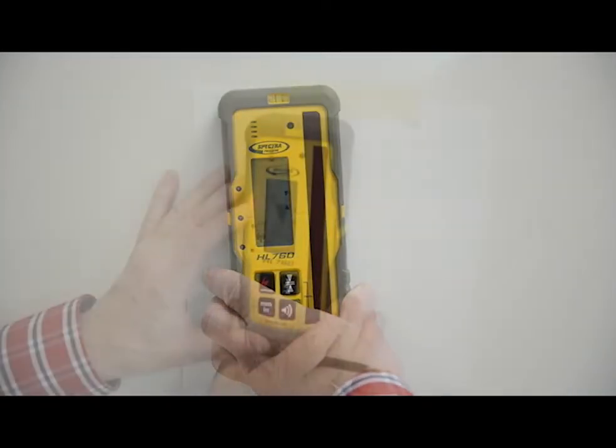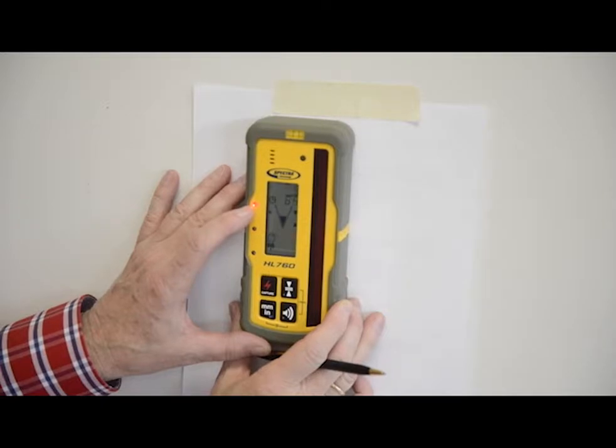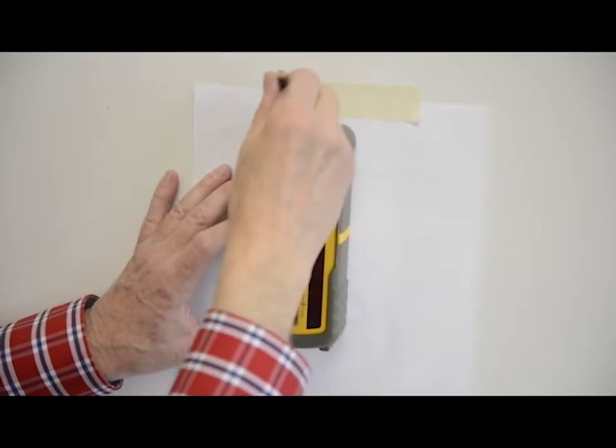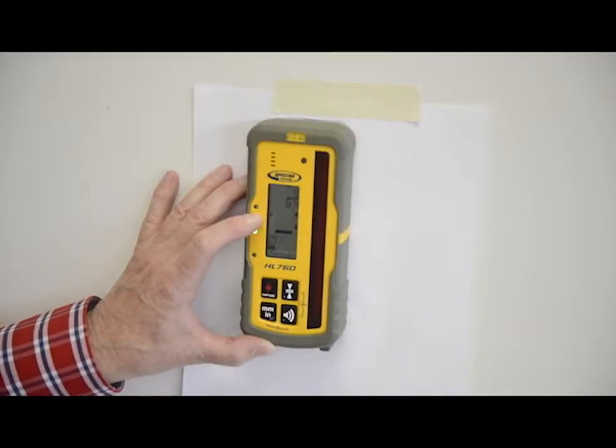Gradually raise or lower the receiver until you get an on-grade reading for the plus Y axis. Using the flat surface on the top of the receiver, make a mark on the wall.